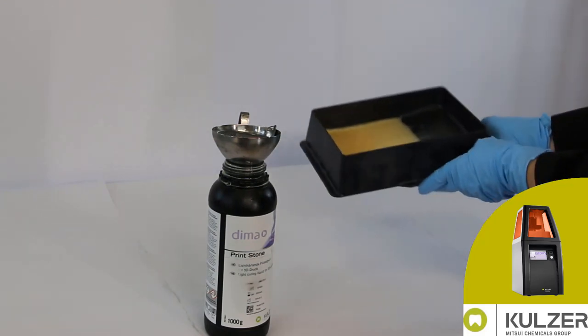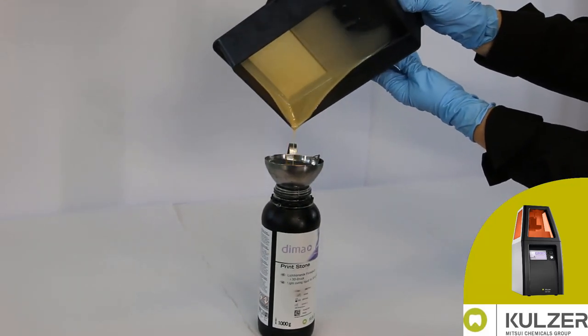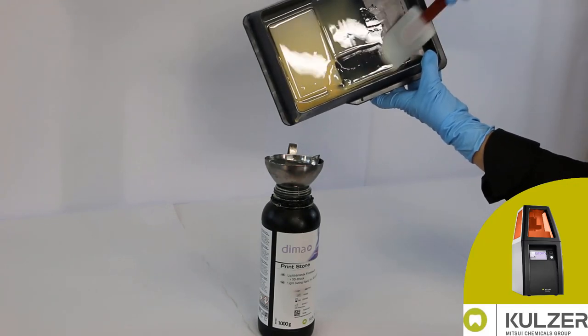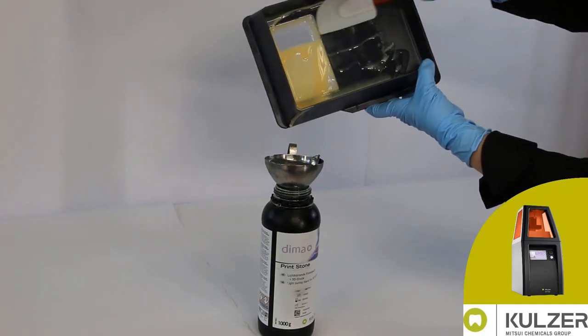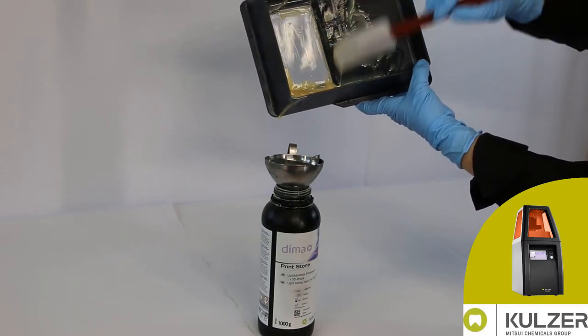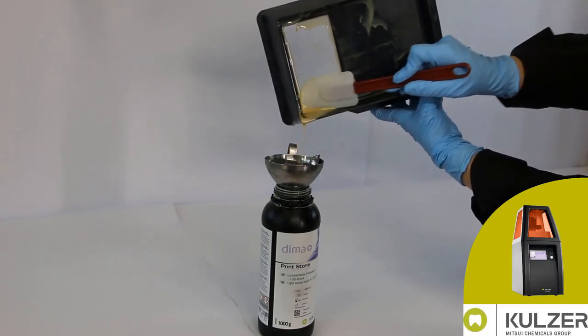Pour the remaining material over one edge of the tray into the steel funnel with the attached strainer. Use the silicone vat spatula included in the accessory kit to push material residues together and fill them into the bottle.